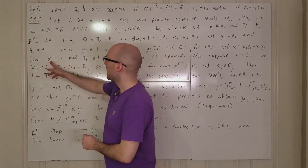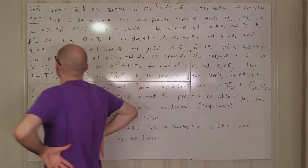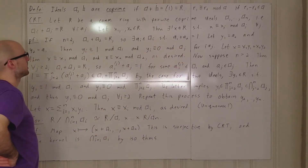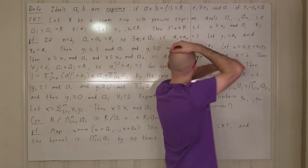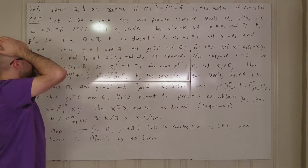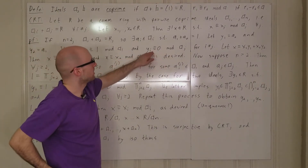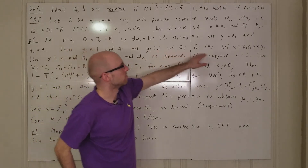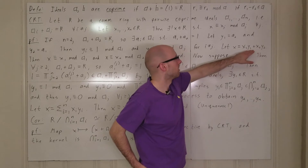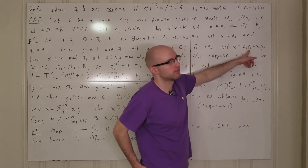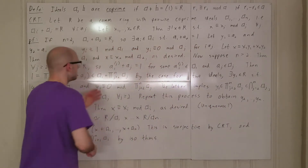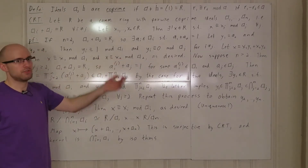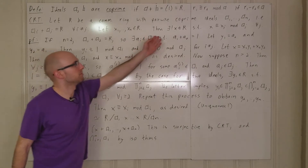When we quotient by a1, y2 is congruent to 0 mod a1 so that term drops out, and y1 is congruent to 1 mod a1 so we're left with just x1. Therefore x is congruent to x1 mod a1. By the same argument, x is congruent to x2 mod a2, which is exactly what we wanted.